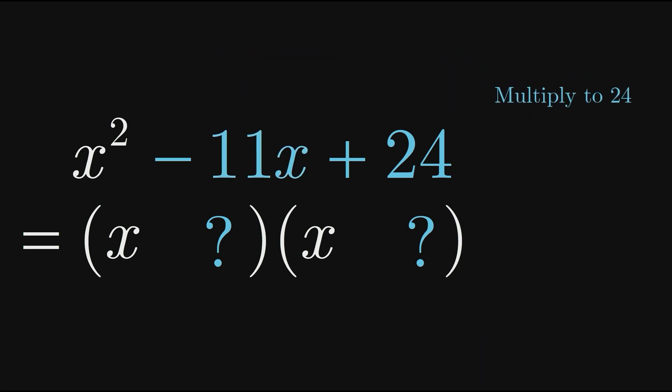Some whole numbers that multiply to 24 are 1 and 24, 2 and 12, 3 and 8, and 4 and 6. We want the pair that also add to negative 11.